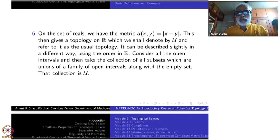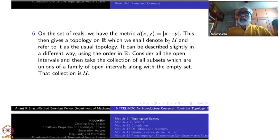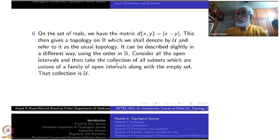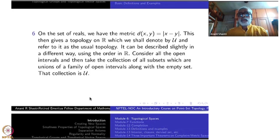This construction is similar to what we did for τ using balls with the metric. For real numbers you don't have to refer to the metric; you can use the order. For example, the interval (a, b) can also be thought of as an open ball centered at (a+b)/2 with radius (b−a)/2. But I am never mentioning the metric — I am just looking at the order, which is not available if you go to ℝ², ℝ³, or complex numbers.